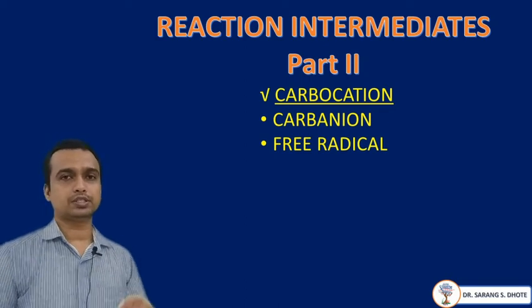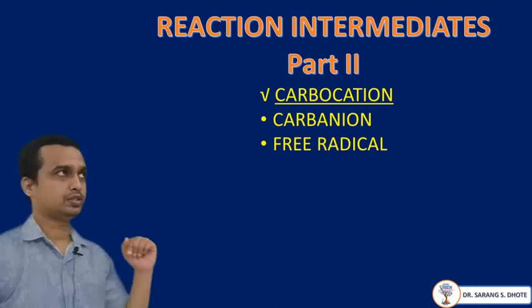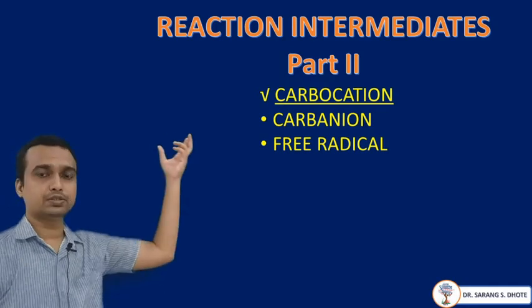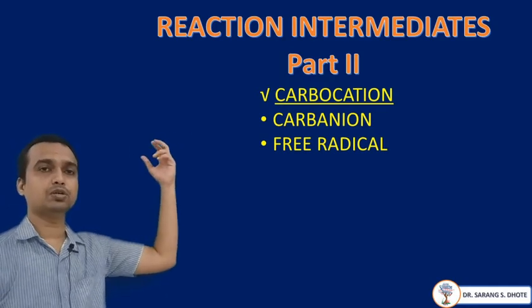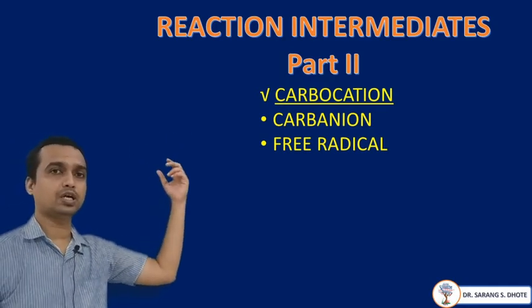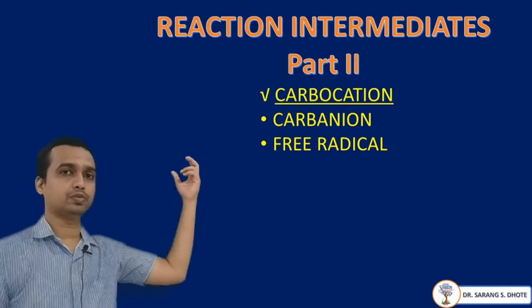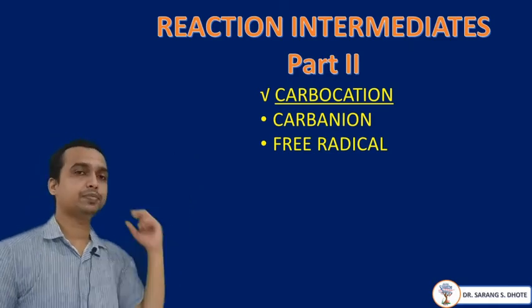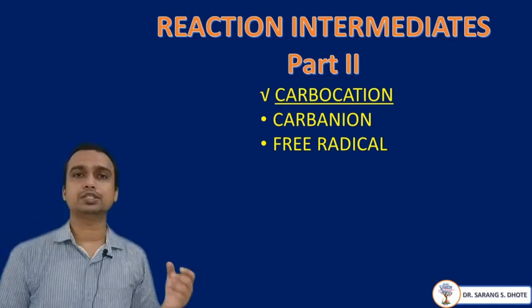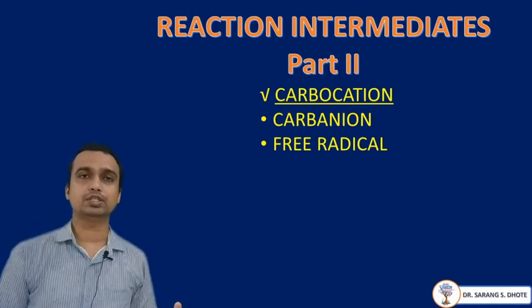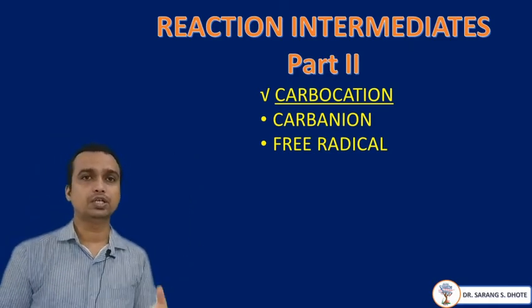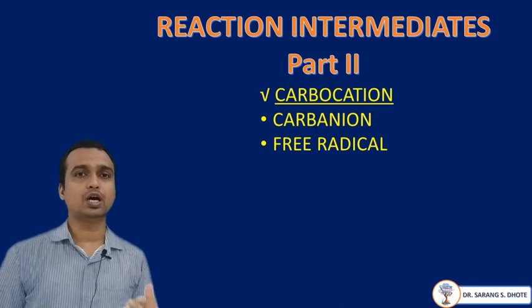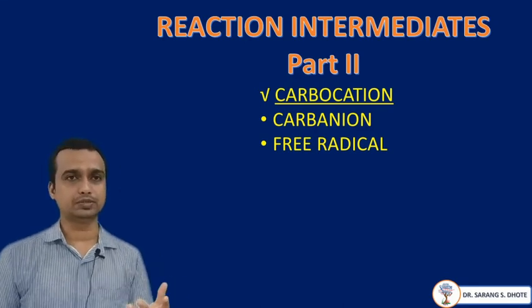In reaction intermediate part 2, before this we already discussed what is the meaning of a carbocation and how it is formed — that was part 1. Now in part 2, we deal with the study of what is a carbanion, how it is formed, and their properties.